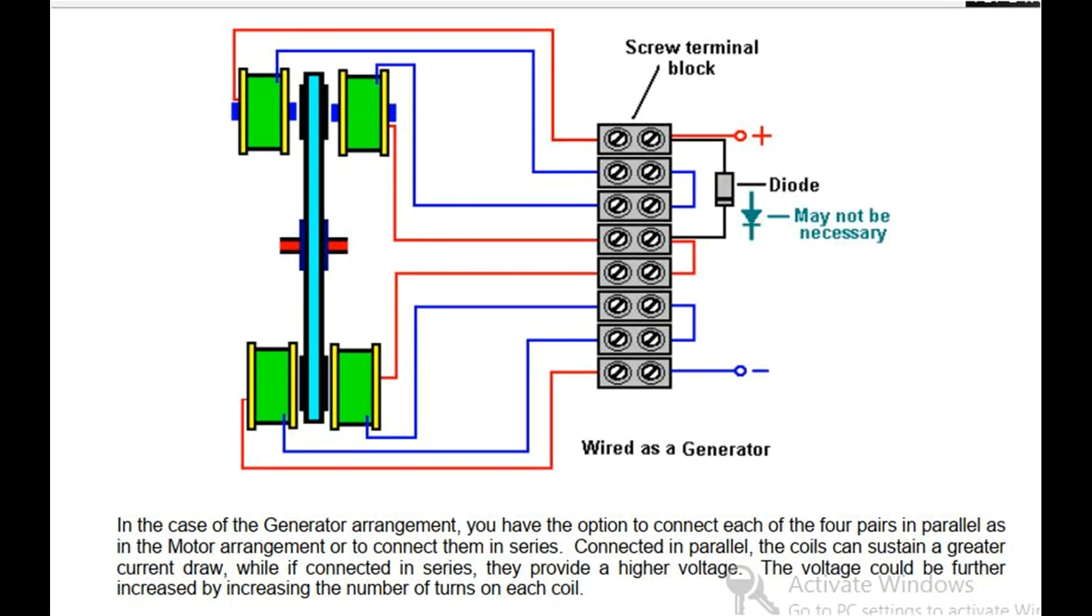In the case of the generator arrangement, you have the option to connect each of the four pairs in parallel as in the motor arrangement or to connect them in series. Connected in parallel, the coils can sustain a greater current draw, while if connected in series, they provide a higher voltage. The voltage could be further increased by increasing the number of turns on each coil.